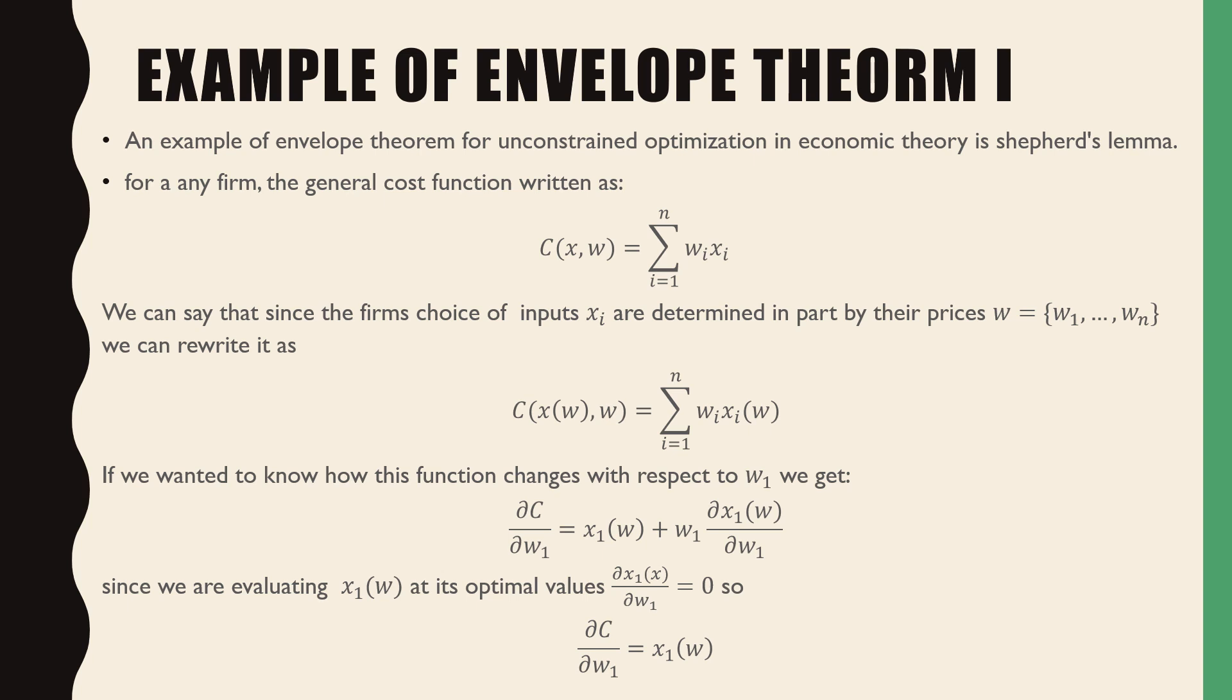Since we are evaluating x_1, which is parameterized by its wages or input prices of all other vectors, at its optimum value, it is equal to zero. This being said, we get our input demand x_1*(w). That's Shepard's Lemma.